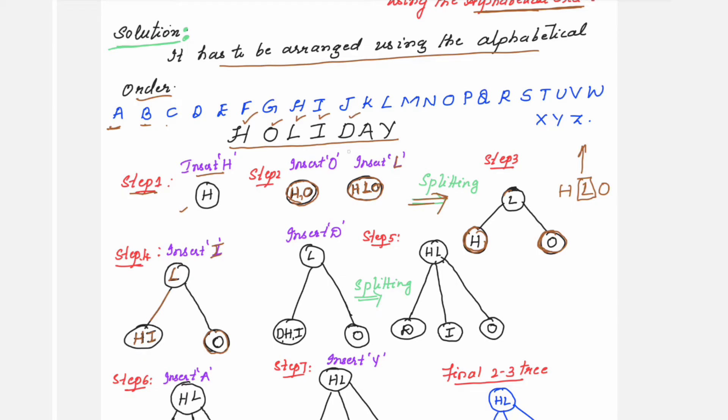Insert D, the next one. This is D, the D element you need to insert. Every time you have to insert the elements only in the leaf node. D is before L, so it will be towards the left side. Previously, H and I were already existing. D is before H, D appears before H in the order. You're going to write D before H. At this point, if you see there are three elements in the node which are not allowed, so you will carry out the splitting.